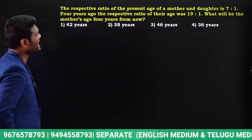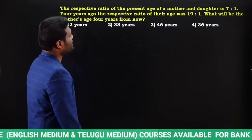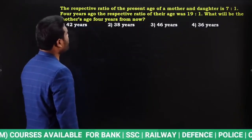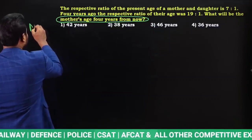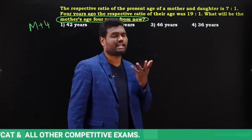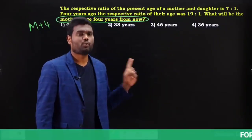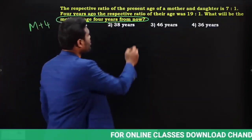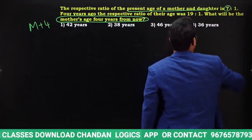The respective ratio of the present age of a mother and daughter is 7:1. Four years ago, the respective ratio of their ages was 19:1. We need to find the mother's age 4 years from now. The options given are mother's age after 4 years. Since the present ratio is 7:1, the mother's present age should be a multiple of 7.